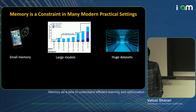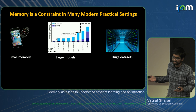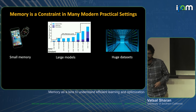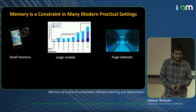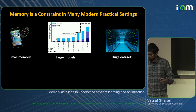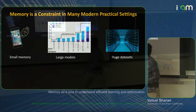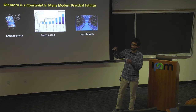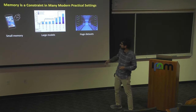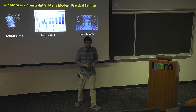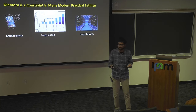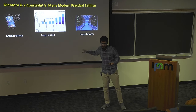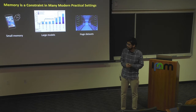At the same time, memory is increasingly a very important constraint in many practical settings, because we often want to run our models on devices with small memory. We increasingly want larger and larger models because larger models seem to do better. Available memory has been a bottleneck for how large a model we can train, and every time we've had chips with more memory, practitioners have quickly developed larger models too. With these large models we need large amounts of data to train them, and that requires a lot of memory to store — and access can be expensive.